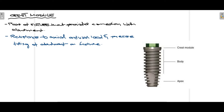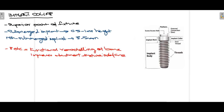The second part of the fixture is the crest module. The crest module is the part of the fixture that provides connection with the abutment. As seen in this diagram, the crest module connects to the abutment that will eventually be placed on top of it. The role of the crest module is to provide resistance to occlusal loads and precise fitting of the abutment on the fixture.